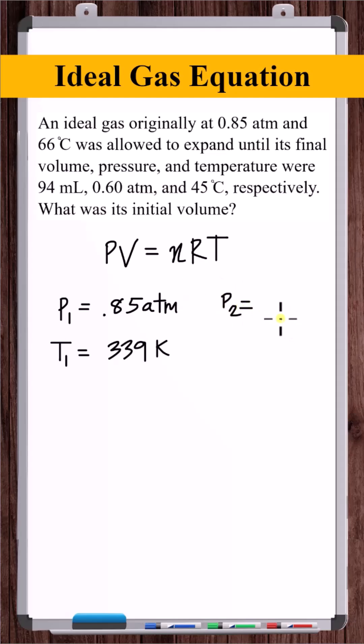where its pressure was 0.6 atmospheres, its temperature was 45 plus 273, 318 Kelvin, and volume 94 milliliters.